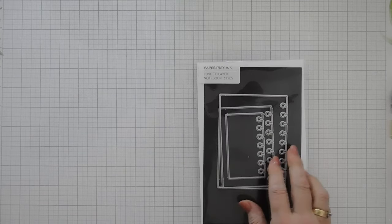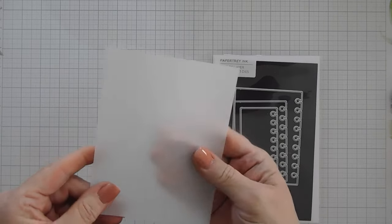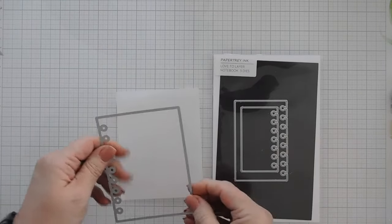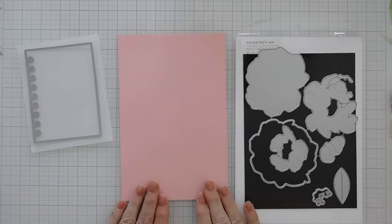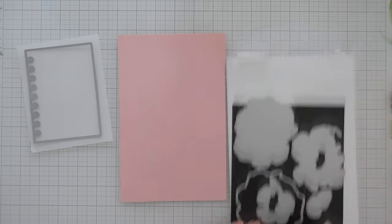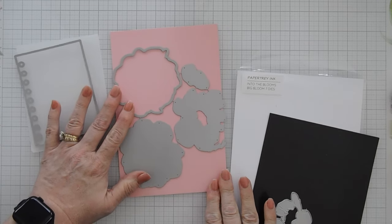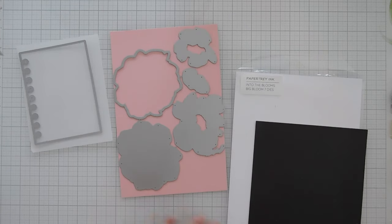For my card today we're going to create a pink card. So I have a piece of vellum. This is a heavyweight vellum and I'm going to use the largest notebook die and we're going to cut this out. We're going to die cut our bloom with Paper Tray Inks Pale Peony cardstock and we're just going to layer all of the dies here and I'm going to die cut all five pieces out.